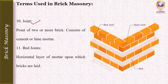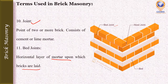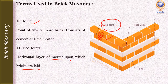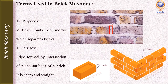The next term is joint — the point where two or more bricks or stones meet is called a joint. Joints consist of cement or lime mortar. A bed joint is horizontal — it is the horizontal layer of mortar upon which bricks are laid. The joint between two stacked bricks, marked by the red line in the diagram, is the bed joint. A head joint, also called a perpend, is the vertical joint of mortar that separates two bricks.